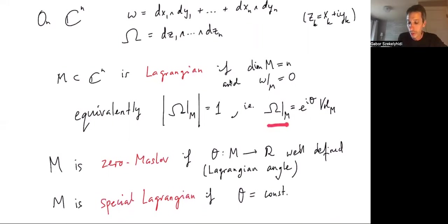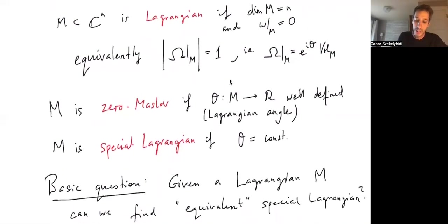In particular, we can compare the holomorphic n-form when restricted to M with the volume form of M. I'm implicitly assuming that M is oriented, and then these will be related by some unit complex number at each point. We call the Lagrangian zero Maslov if this unit complex number can be defined globally as e^{iθ} for a real valued function. If this is the case, we call θ the Lagrangian angle or the grading of M, and then M is special Lagrangian if this Lagrangian angle is constant.